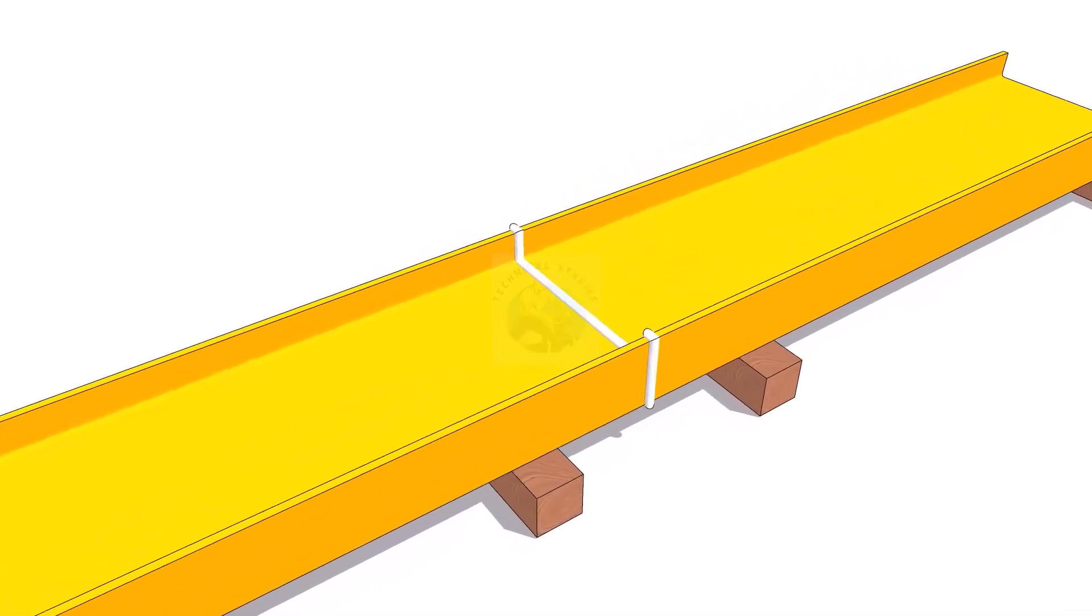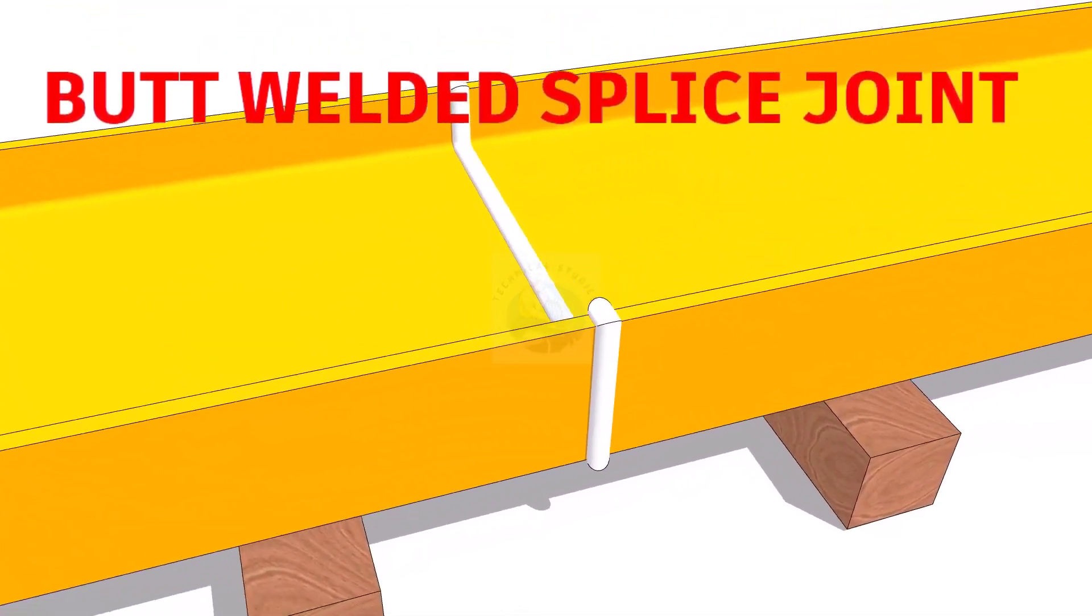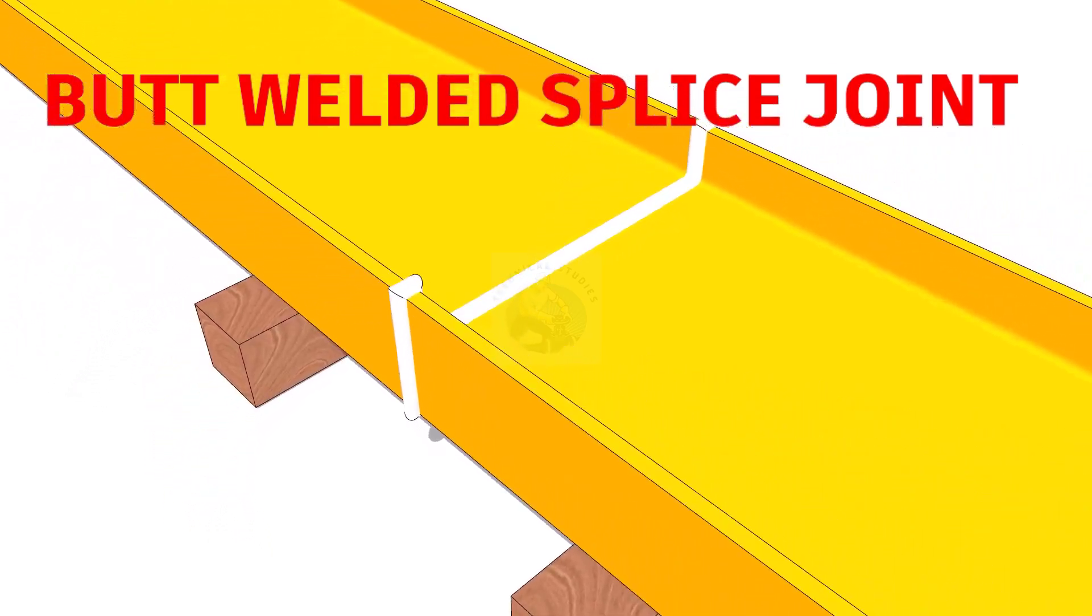There are many methods to joint two or more columns or beams together. Some of the common types of splice joints are: